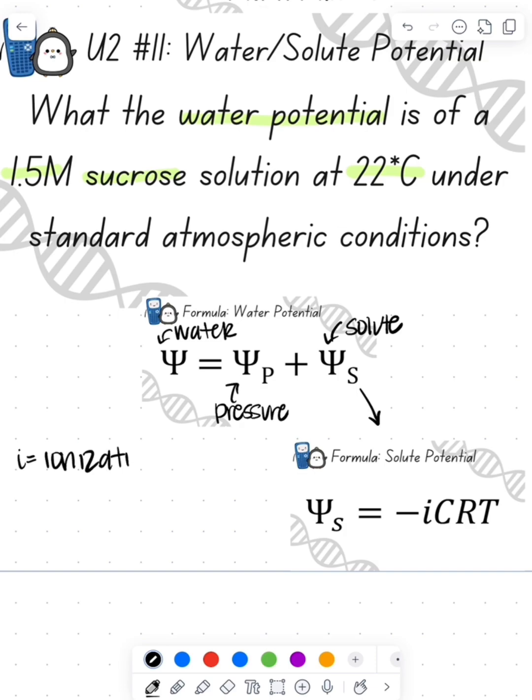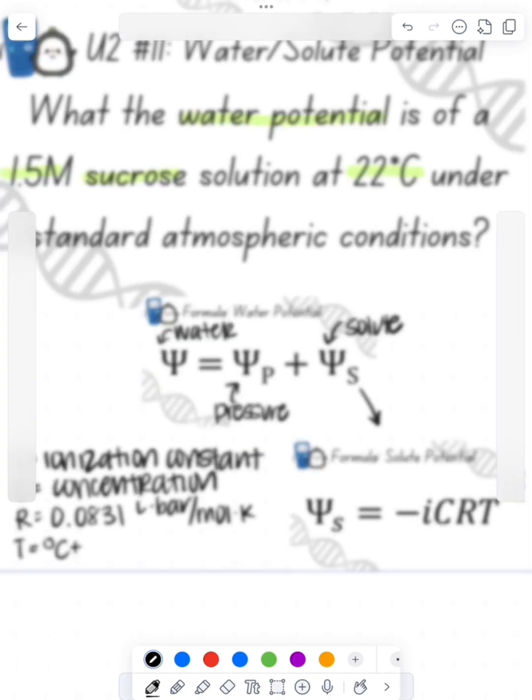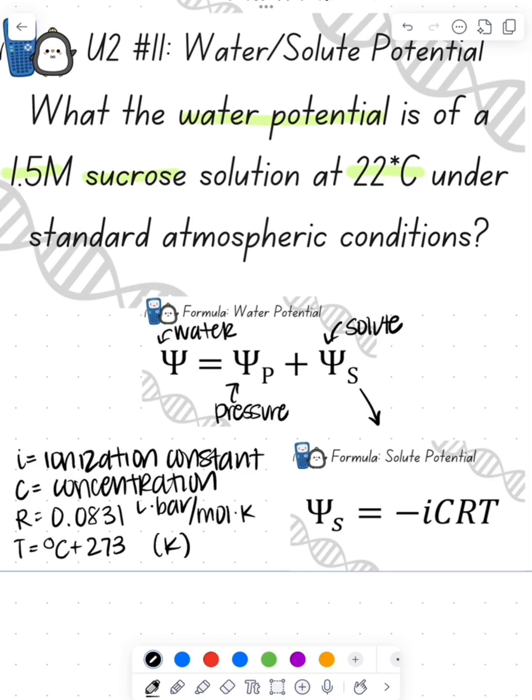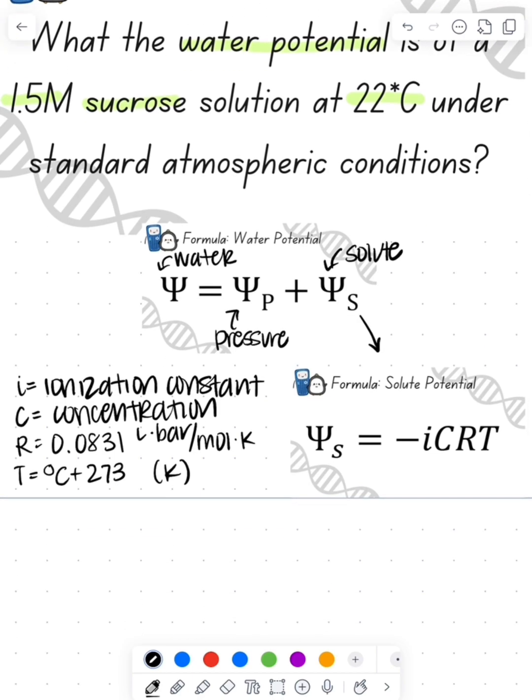Where I is the ionization constant, so how many ions are formed when it dissociates in water. C is the concentration, usually given in molar. R is going to be our pressure constant, 0.0831 liter bar per mole Kelvin. And then our temperature is going to be our degrees Celsius plus 273 to get it into Kelvins.